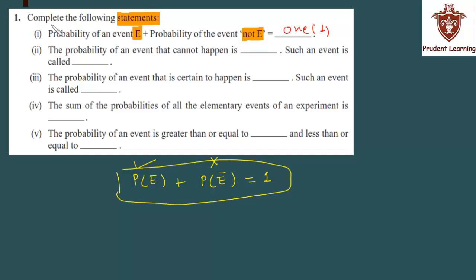Let us see the second section: the probability of an event that cannot happen. Here they are asking: an event that cannot happen at all — what is the probability of it occurring? You understand the answer — if an event cannot happen, its probability of occurring will be 0. We write 0 here. Such events, whose probability of occurring is 0, are called impossible events.